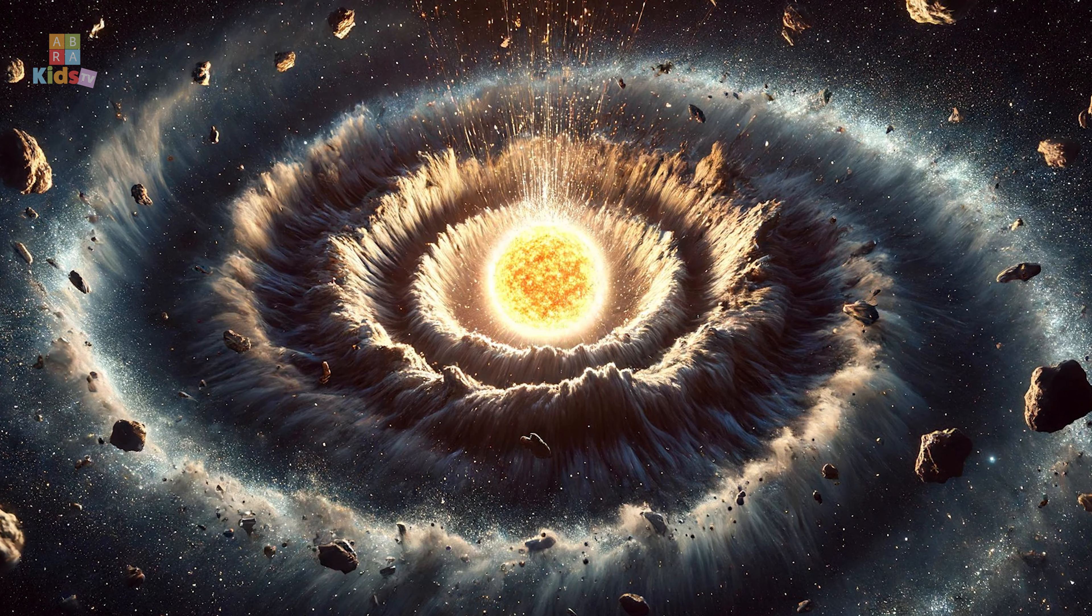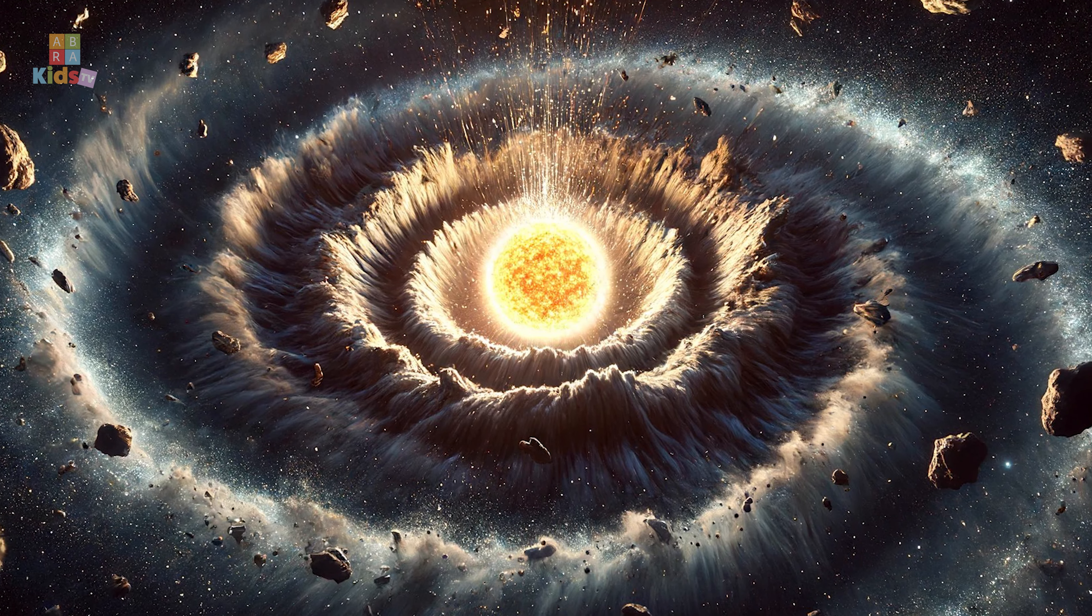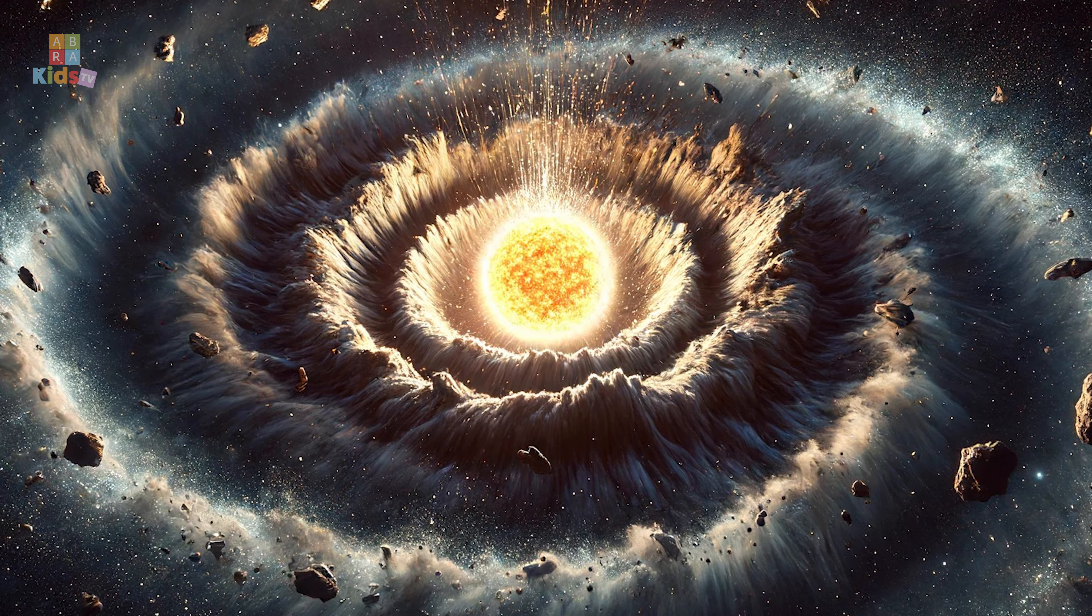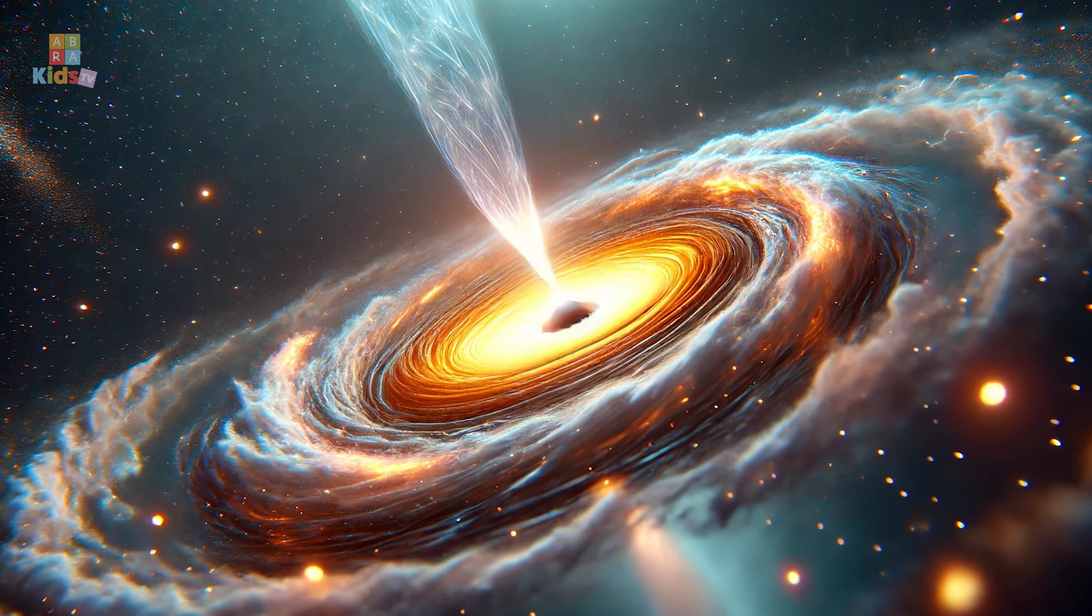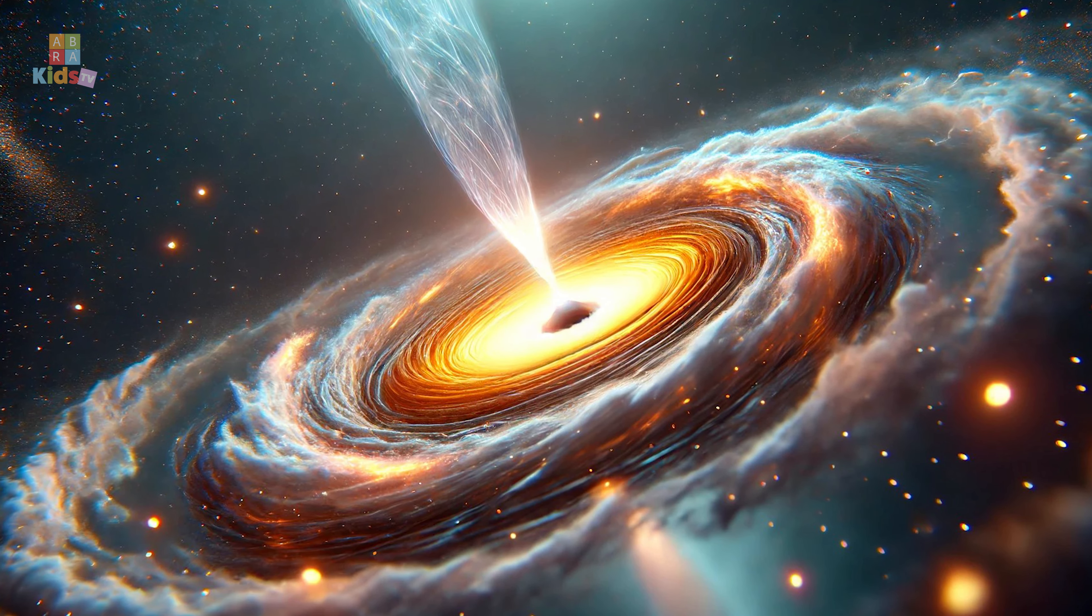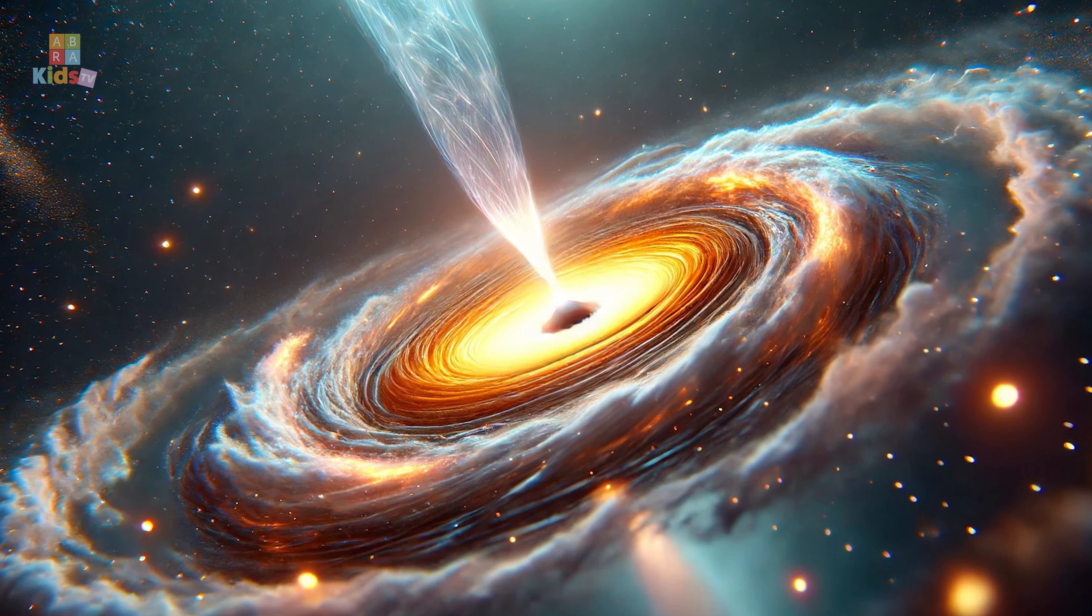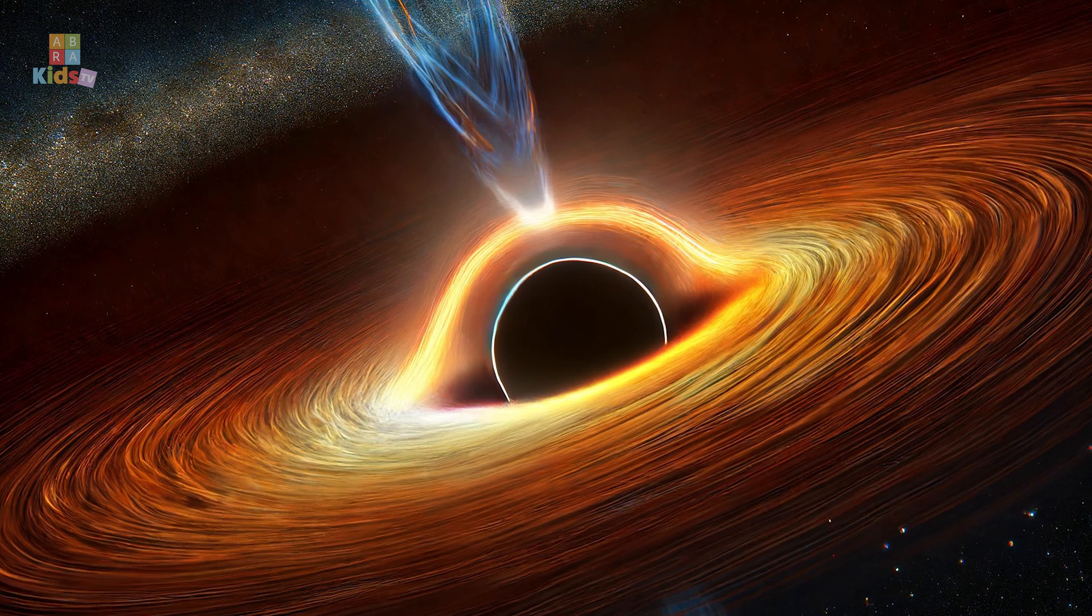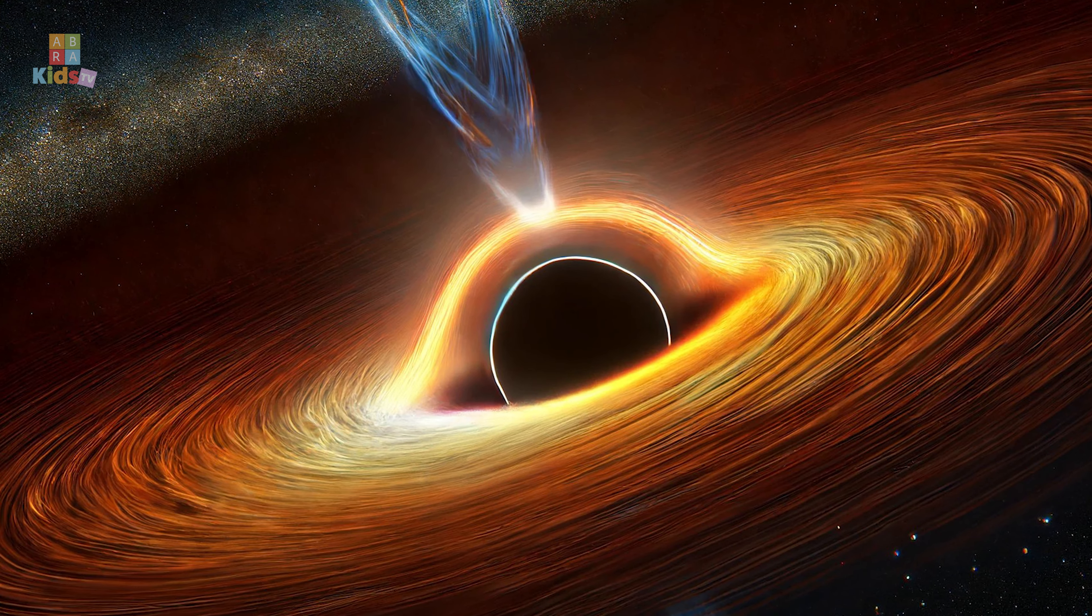If the remaining core is sufficiently massive, it continues collapsing into a singularity, a point of infinite density and zero volume. This singularity is what we call a black hole. The gravity in this region is so strong that not even light can escape, hence the name black hole.